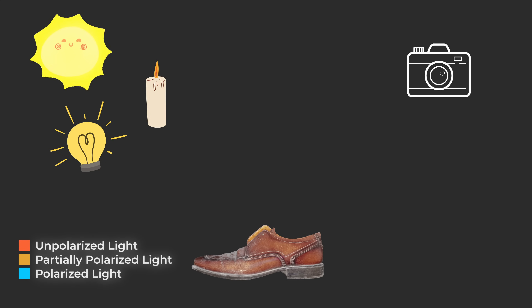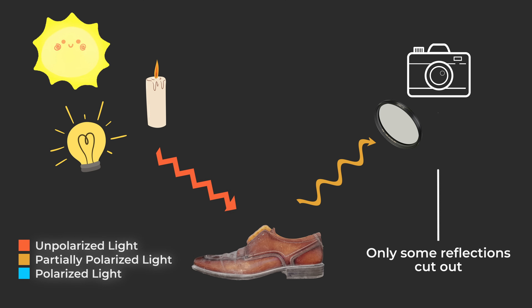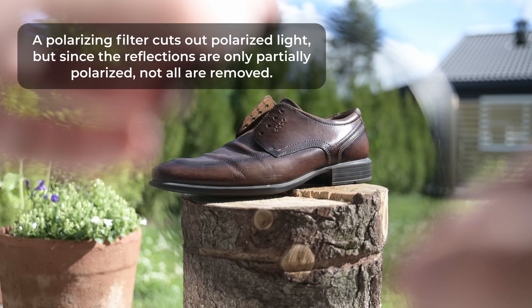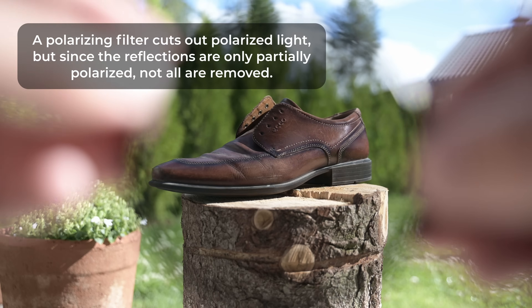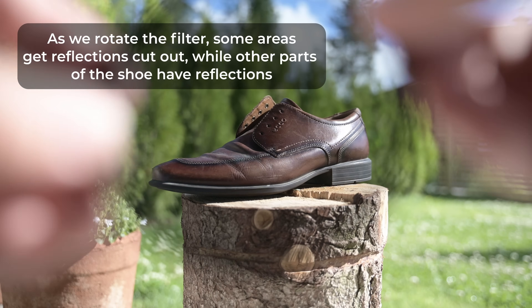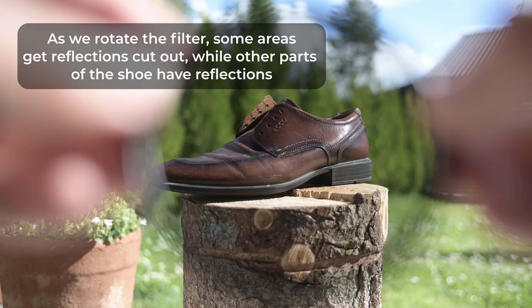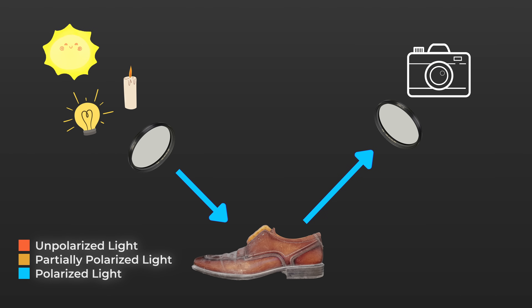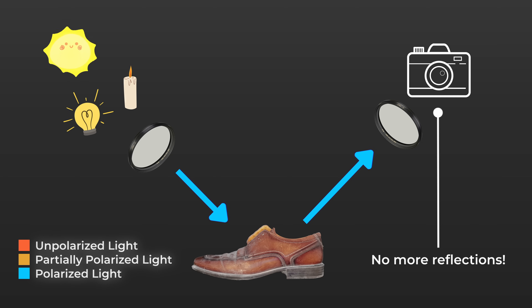With that said, here is the TLDR version. When light is emitted — either from the sun, a candle, light bulb, whatever — that emitted light is unpolarized. The moment it hits a surface and is reflected, it becomes partially polarized. You can visually see this when you use a circular polarization filter on your camera lens. As I rotate the filter, you'll see that the reflections are being cut out, but not all of them. Because that light is only partially polarized, we want to polarize all of it. So adding a polarizing filter to the light will then polarize that light, and this technique is what we call cross-polarization.